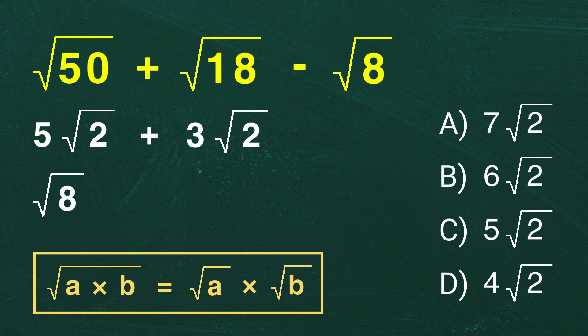Now, let's simplify the square root of 8. The number 8 can be factored as 4 times 2. Using the same rule, we split it as the square root of 4 times the square root of 2. Since the square root of 4 is 2, this becomes 2 root 2.